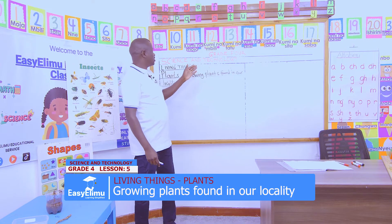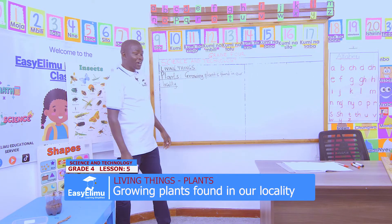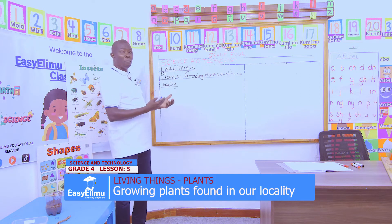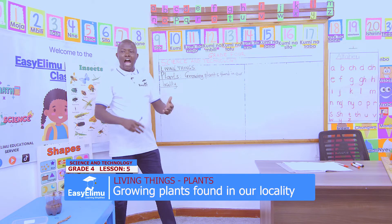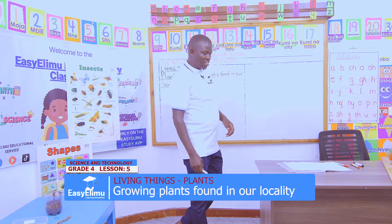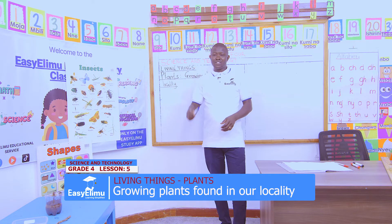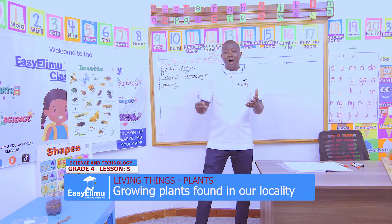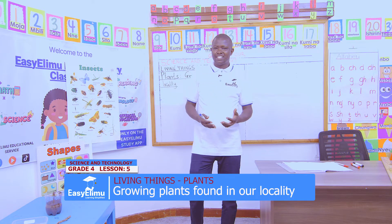In our grade 4 science and technology on living things, we look at how to grow plants found in our locality. And in our previous lesson, we had looked at how to handle plants.